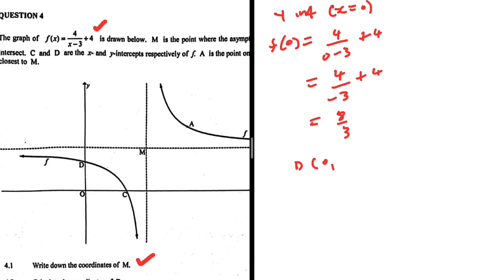So the coordinates of D, x is 0 and y is 8 over 3. So there we go.